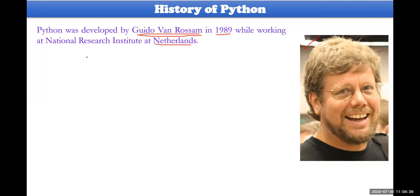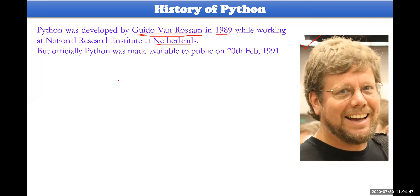He actually started working in 1989, and originally it came to the picture. Officially, Python was made available to the public on 20th of February 1991.